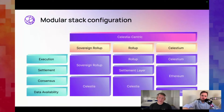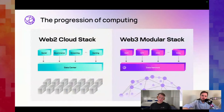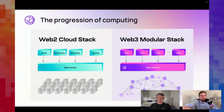Comparing the traditional web2 cloud stack with the web3 modular stack: in web2 we have large data centers with centralized data storage and ownership. In the web3 modular stack, Celestia aims to build a data network that anyone can build on top of. The big thing is shared security — each one of these layers, whether DeFi, NFTs, DAOs, or decentralized social, could all be their own rollups.